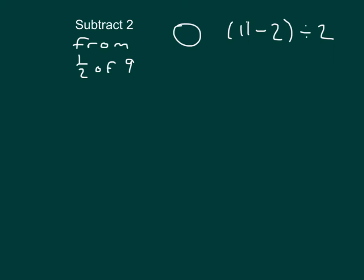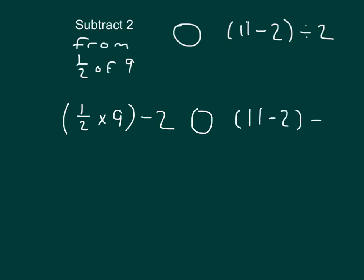Here I'm comparing words with an expression. I'll write out these words as an expression first and then evaluate them. We have: subtract 2 from 1 half of 9. So I have 1 half of 9, which would be 1 half times 9, and I'm subtracting 2 from it. In this case, I'm comparing it with 11 minus 2 divided by 2.